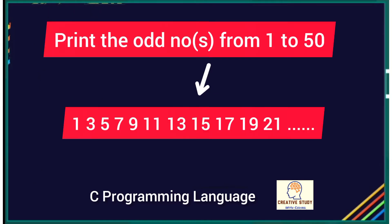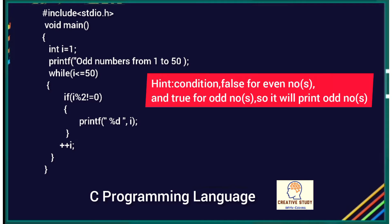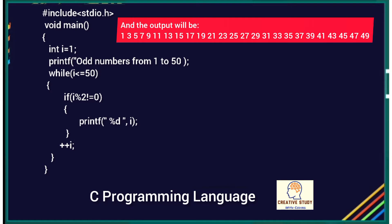Similarly, we can print odd numbers from one to fifty. In this program the condition is false for even numbers and true for odd numbers. In the if statement the condition checks whether a number is not exactly divisible by two — if so, it prints the odd number. So the output will be 1, 3, 5, 7, 9, 11... up to 49. Since fifty is an even number, the if condition is false, and when i becomes fifty-one the while loop terminates.